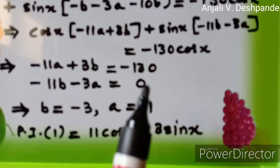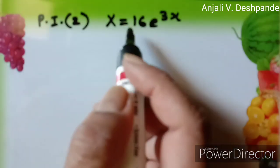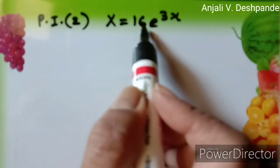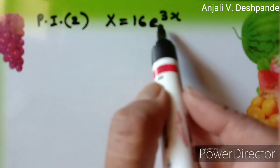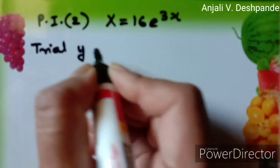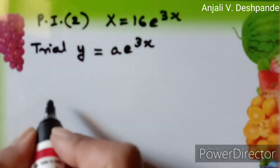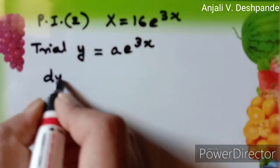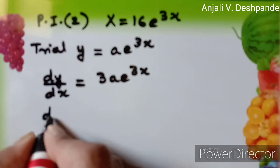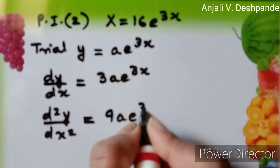Likewise, now we are going to use this method to find the particular integral of the second function in the given differential equation, which was 16e raised to 3x. Since the function is of the exponential form, we are going to put the trial solution — trial particular integral — as a·e raised to 3x. In our equation we have dy/dx, so dy/dx is equal to 3a·e raised to 3x. Also, d²y/dx² is equal to 9a·e raised to 3x.